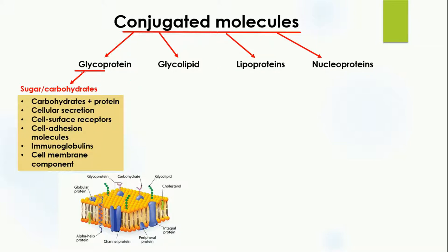First, glycoprotein. The word 'glyco' means sugar or carbohydrates, so glycoproteins are conjugated molecules made when carbohydrates and proteins are joined together. Glycoproteins are important for cellular secretions — mostly cellular secretions are glycoprotein in nature. They are also cell surface receptors and cell adhesion molecules.